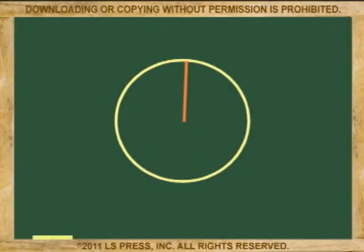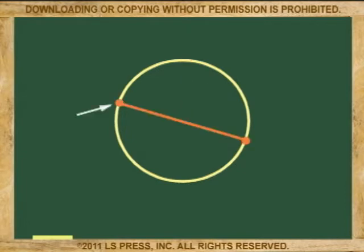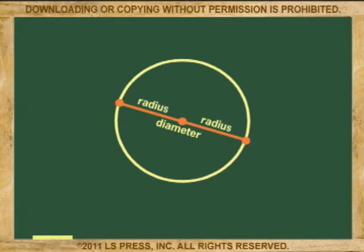A segment that goes from the center to any point on the circle is named the radius. A segment that goes from any point on the circle to another point on the circle and passes through the center is called the diameter. Notice that a diameter always represents two radii — radii being the plural of radius.